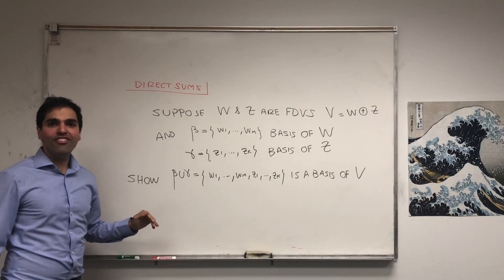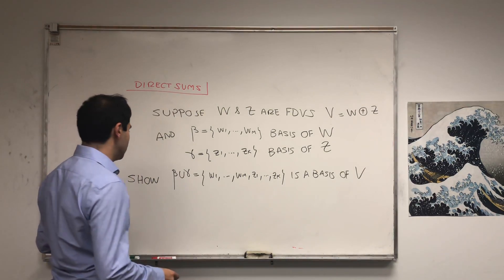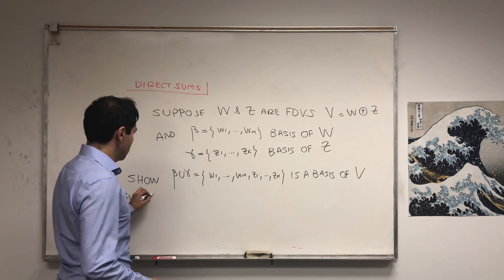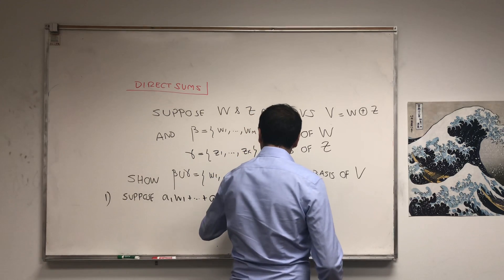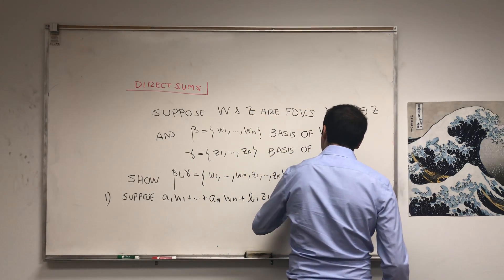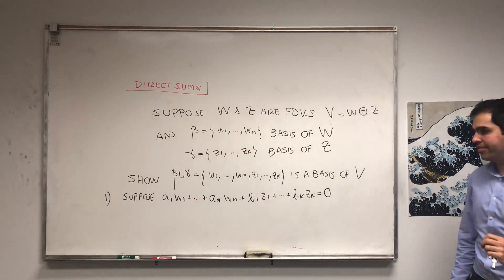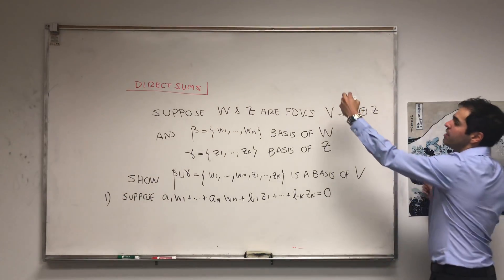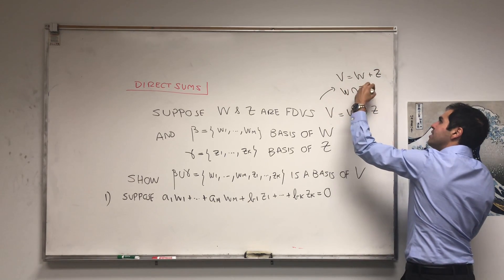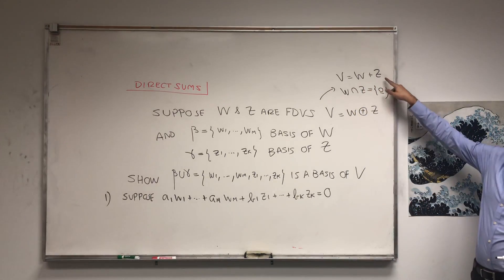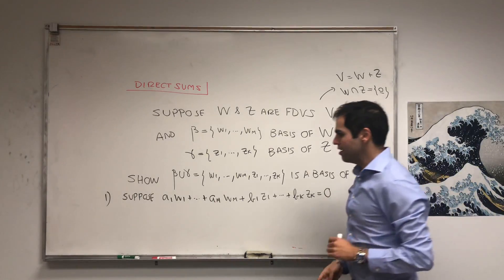What's the definition of a basis? It's a linearly independent set that spans V. So let's first show that it's linearly independent. Suppose A1·W1 + ... + Am·Wm + B1·Z1 + ... + Bk·Zk equals the zero vector, and we want to show all those constants are zero. Remember the definition of direct sum: V is a sum of the two, and W ∩ Z is trivial. This intersection condition is what will help us.